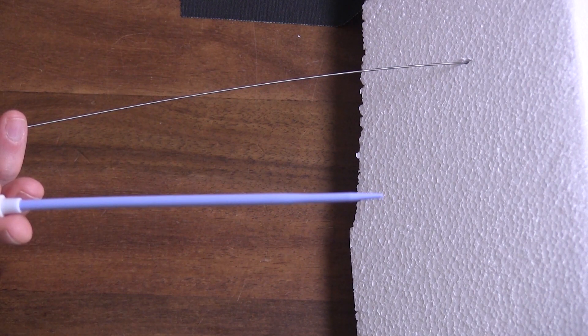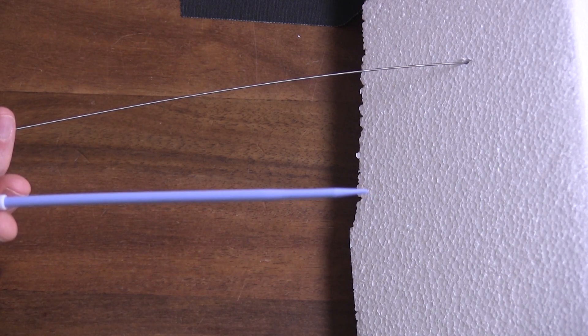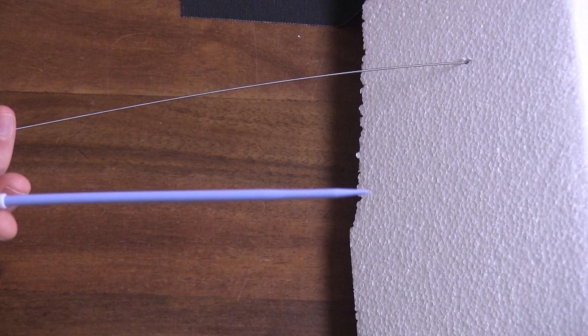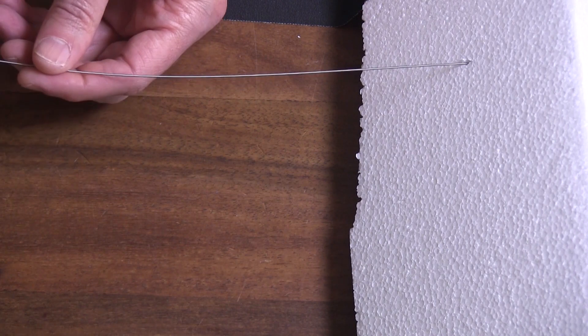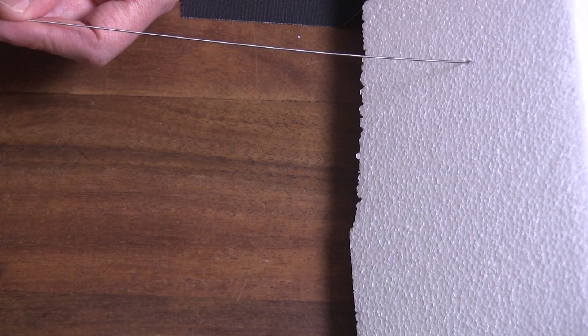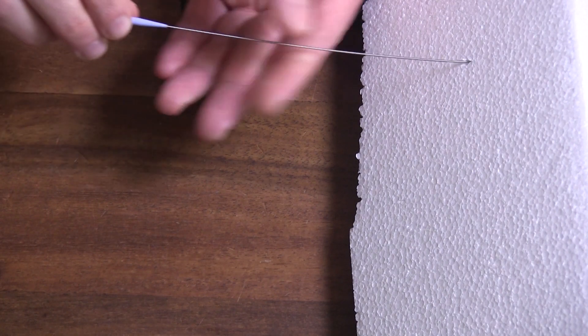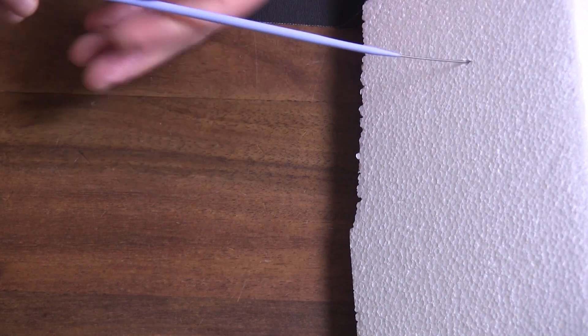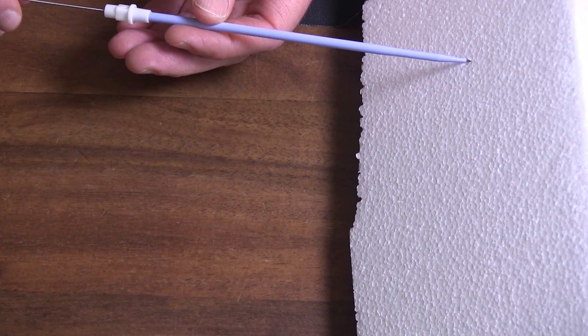You could get away with really crappy technique when placing triple lumen central lines because at seven French even bad technique usually will work and that's not going to be true for these larger catheters. So let's load up our dilator onto our wire and now I'm going to teach you the three portions of the micro skill of dilation.